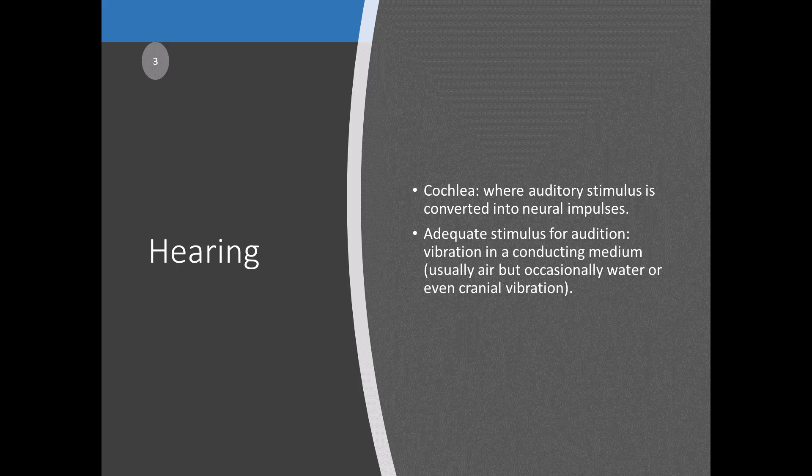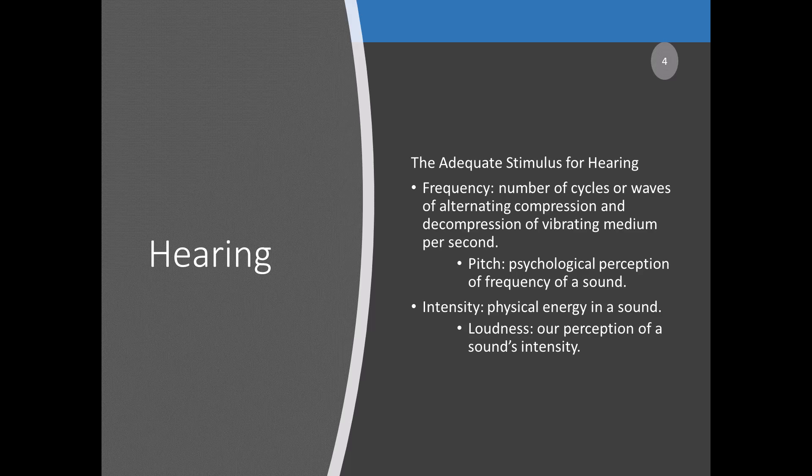The adequate stimulus for hearing is vibration in a conducting medium — usually air, but it could be cranial vibrations. The source of the vibration is often a vibrating sound source like vocal cords, a bell, or a speaker, which alternately compresses and decompresses the air. The term frequency refers to the number of cycles or waves of alternating compression and decompression of the vibrating medium per second.